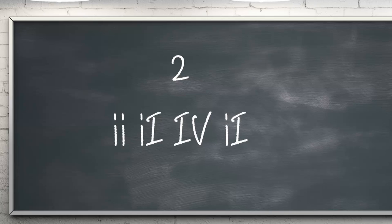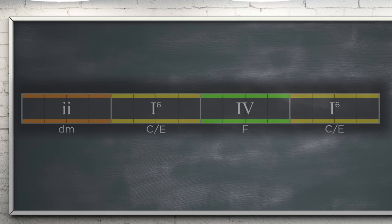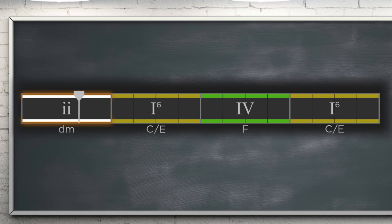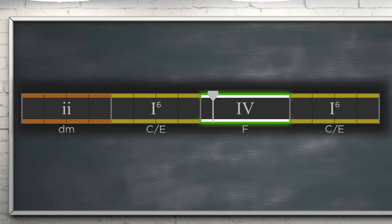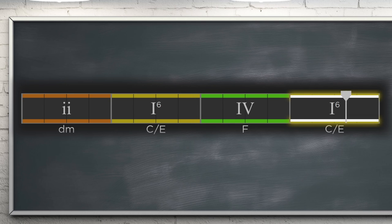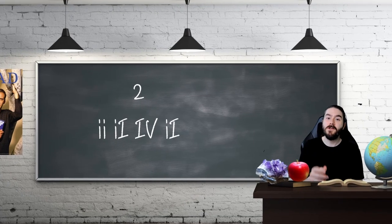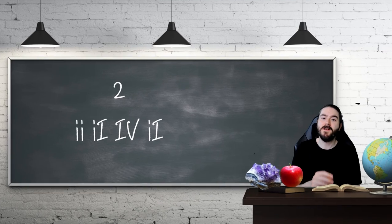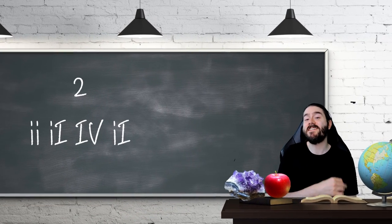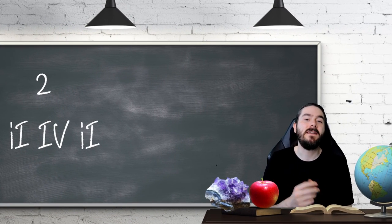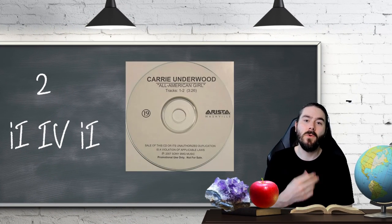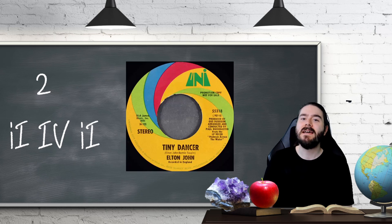In at number 2: 2, 1st inversion 1, 4, 1st inversion 1. The use of two first inversion 1 chords here creates a feeling of continued movement. Examples include All American Girl by Carrie Underwood and Tiny Dancer by Elton John.